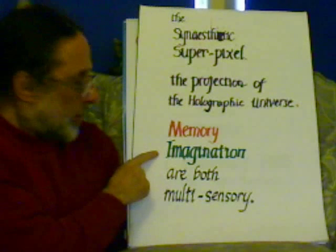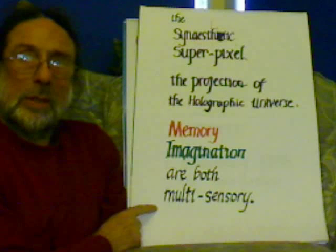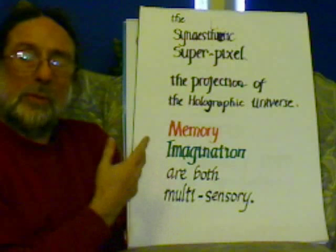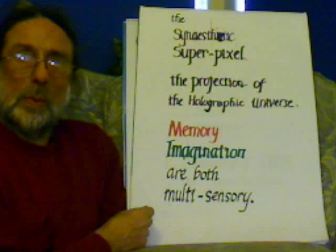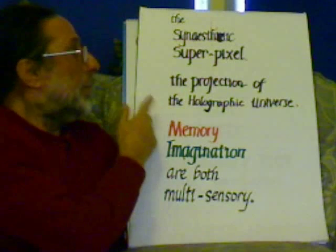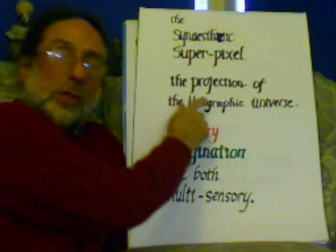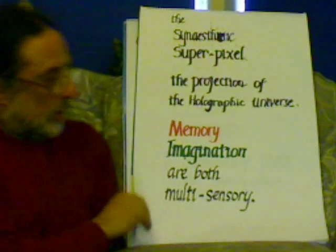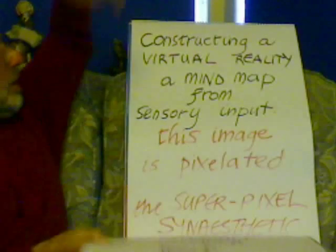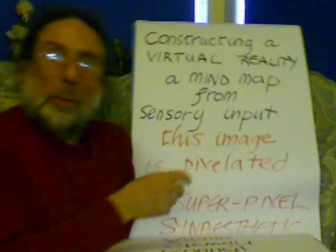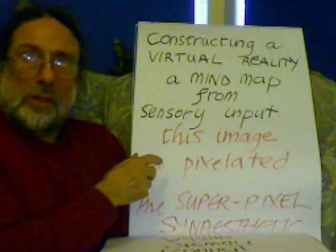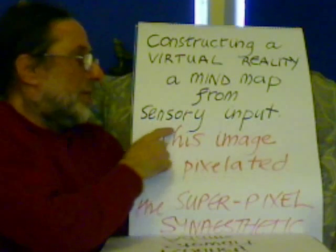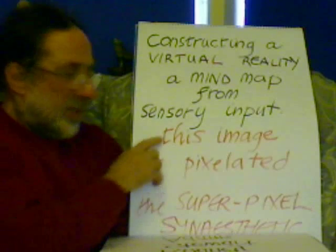Memory and imagination are both multisensory. So it's like we have an array of superpixels which we can fill in with multisensory perception. This can either appear as a projection, or it can appear as sensory information building up the image — like a robot, a child, or a slug would do. It's constructed in a virtual reality, a mind map from sensory input. And this image is pixelated.